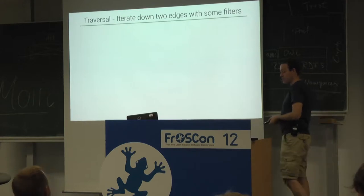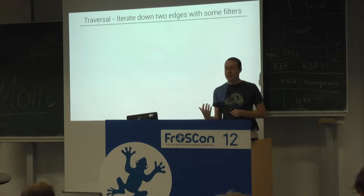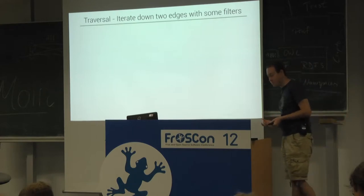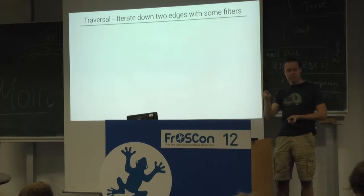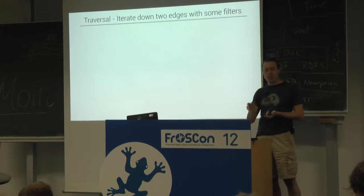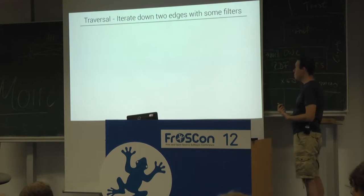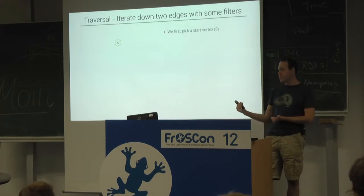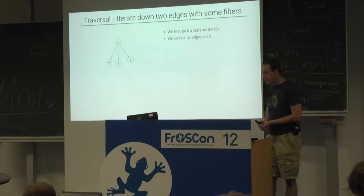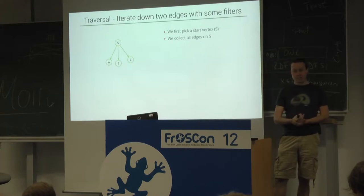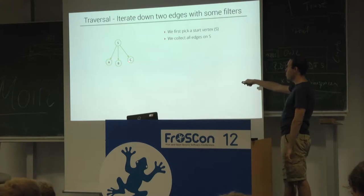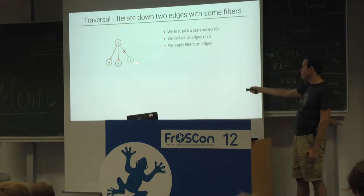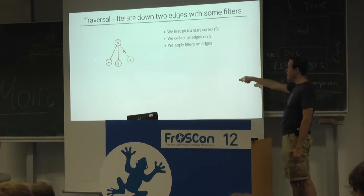The reason why this is expensive, while traversal is cheap, is the query mechanism called a traversal. We are iterating down two edges, two steps starting at a vertex, and applying some filters on each component we find. First, the database picks a start vertex — it always needs one starting point. Then it looks at all edges connected to this vertex, finds all neighbors those edges point to, applies some filters — finding that C doesn't match, but A and B are still okay.